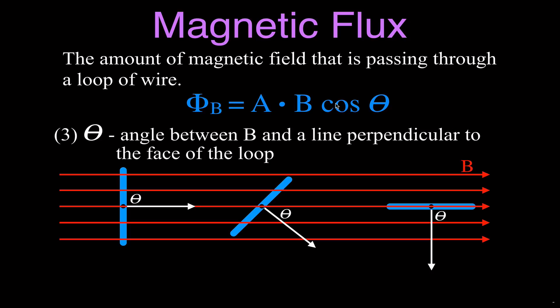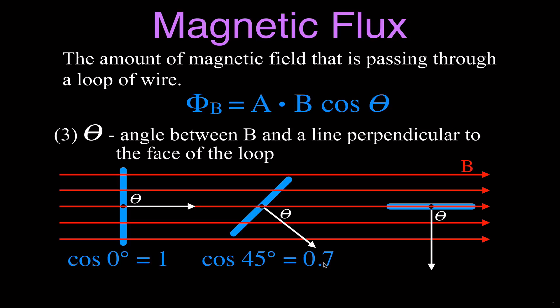It's the cosine — not the sine — of that angle. For the first case, the angle is zero degrees. The angle between the magnetic field line and the perpendicular line is zero degrees, and the cosine of zero is one. This also makes sense qualitatively: as we start turning the loop, there's less magnetic field going through the loop. At about 45 degrees, the cosine of 45 is 0.7, so we're reducing the magnetic flux to about 70%.